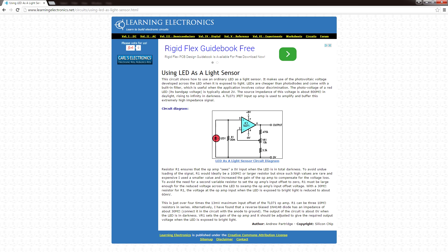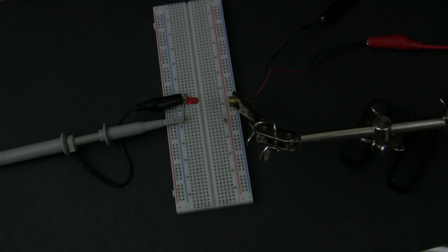You can find circuits on the internet to do this, but the easiest way to use an LED as a light sensor is to just hook it straight to your oscilloscope. Make sure you're using a 10x attenuation oscilloscope probe.